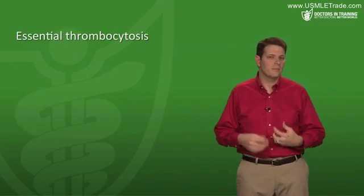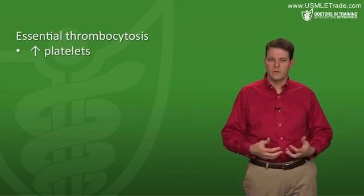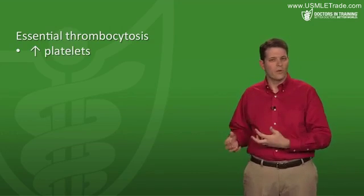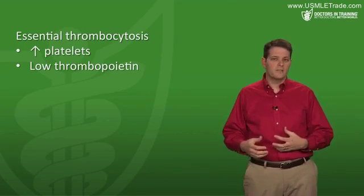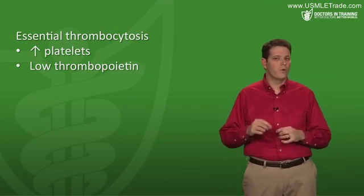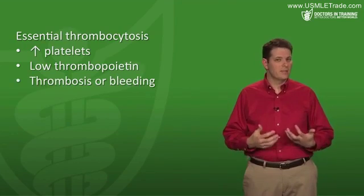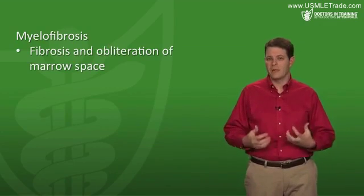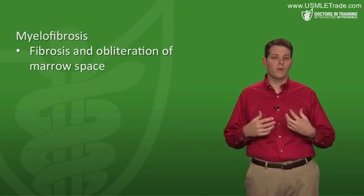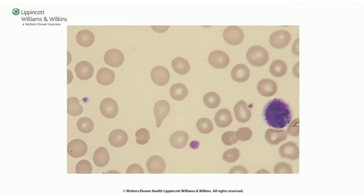Essential thrombocytosis is the platelet equivalent of polycythemia vera — instead of excess red cells, you have excess megakaryocytes making platelets. Thrombopoietin level is also low in essential thrombocytosis. These patients can have thrombosis from too many platelets, or bleeding because the platelets don't function correctly. Myelofibrosis is where fibrosis and obliteration of the marrow space occurs. On biopsy, if bone marrow is infiltrated with fibrotic tissue, that's myelofibrosis — distinct from aplastic anemia, where it's infiltrated with adipocytes. Myelofibrosis causes teardrop-shaped red cells.